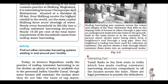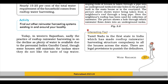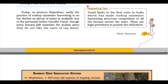Rooftop harvesting was common across the towns and villages of the Thar. Rainwater falling on the sloping roof is taken through a pipe into an underground tanka built in the main house or courtyard. A neighbour's rooftop can also be used for collection of rainwater through a long pipe. Tamil Nadu is the first state in India to make rooftop rainwater harvesting structures compulsory for all houses across the state, with legal provisions to punish defaulters.